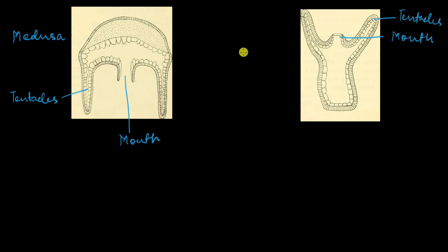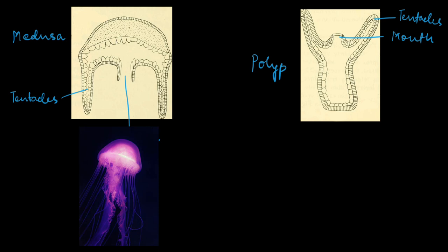This body form is called a polyp. Polyp and medusa are two types of body forms you can see in phylum Cnidaria. Jellyfishes have the medusa body form—you see the mouth is at the underside and all these are the tentacles facing downwards.